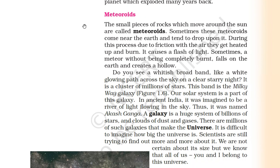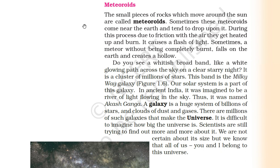Now the meteoroids — the small pieces of rocks which move around the Sun are called meteoroids. Sometimes these meteoroids come near the Earth and tend to drop upon it. When this happens, they enter the atmosphere and due to friction with the air, they get heated up and burn, causing a flash of light.